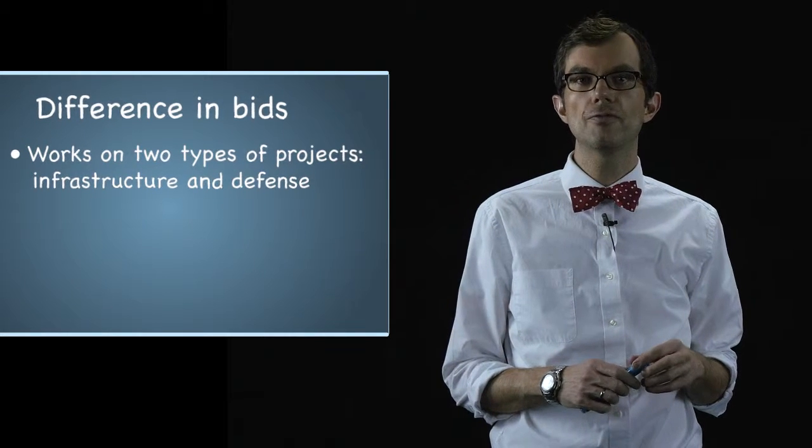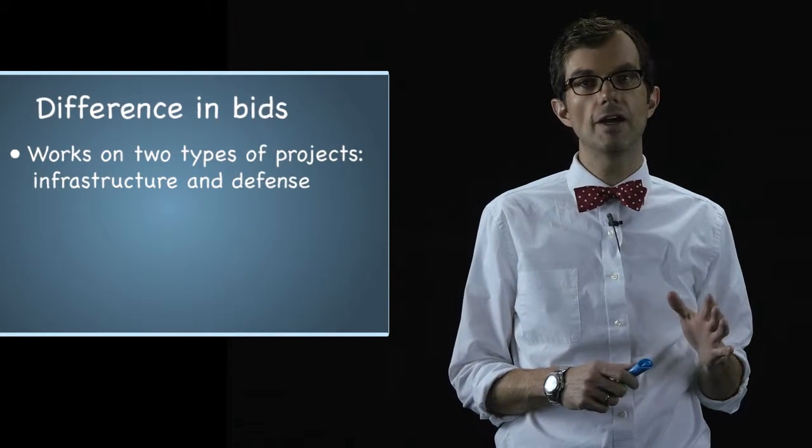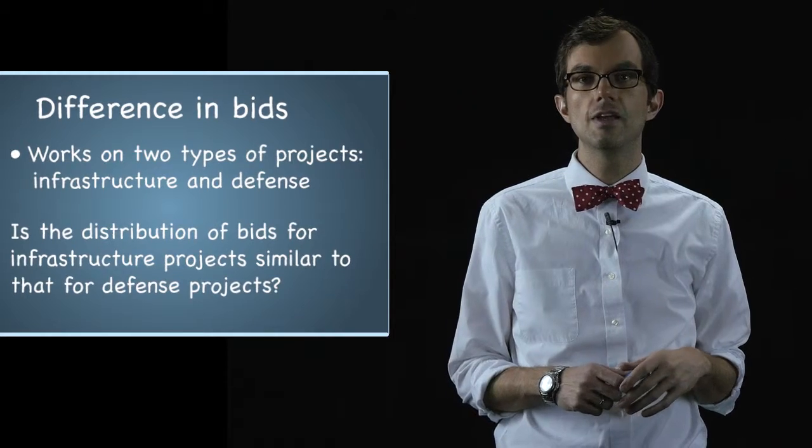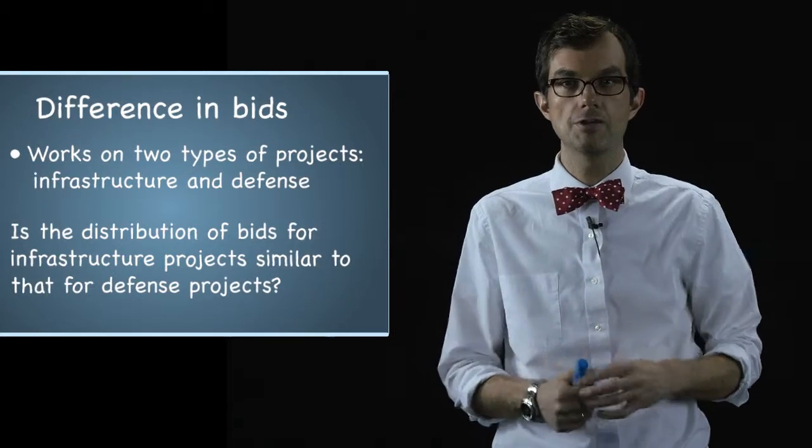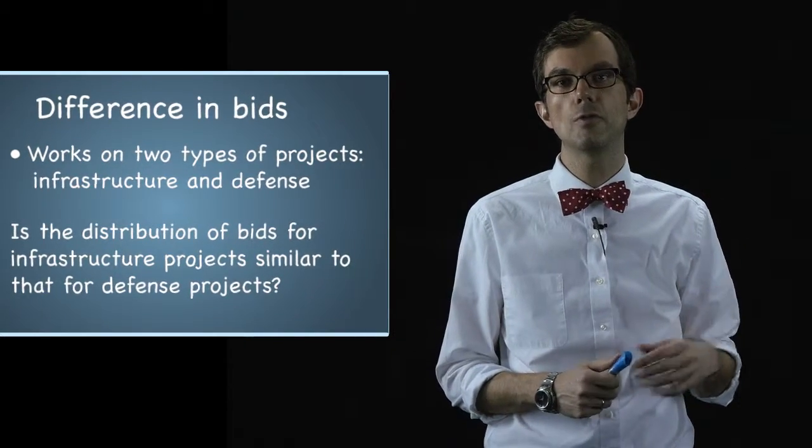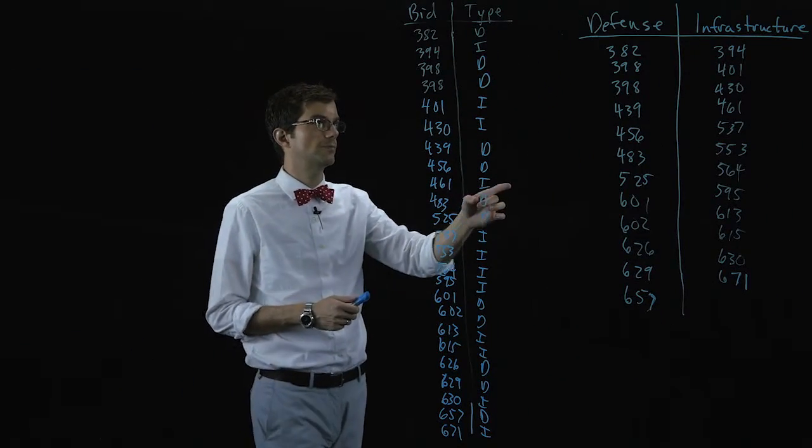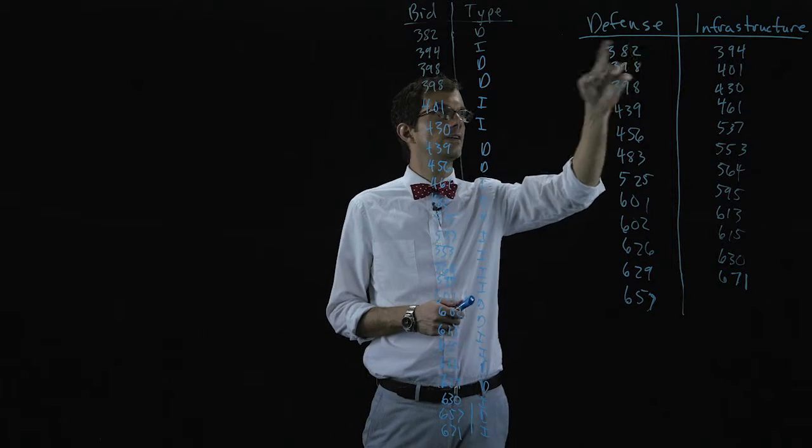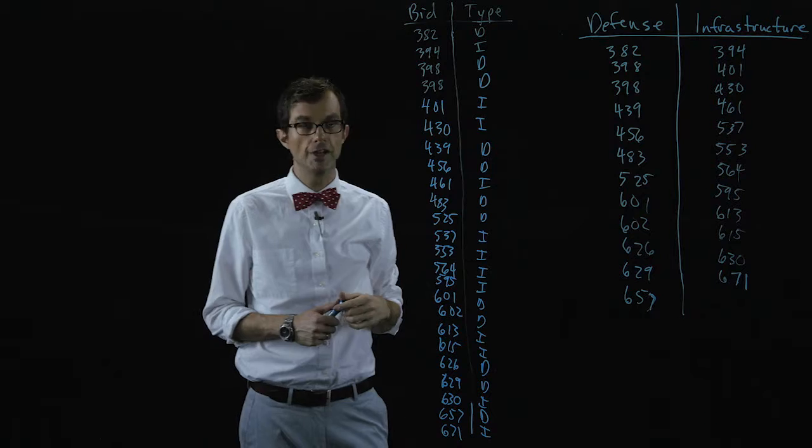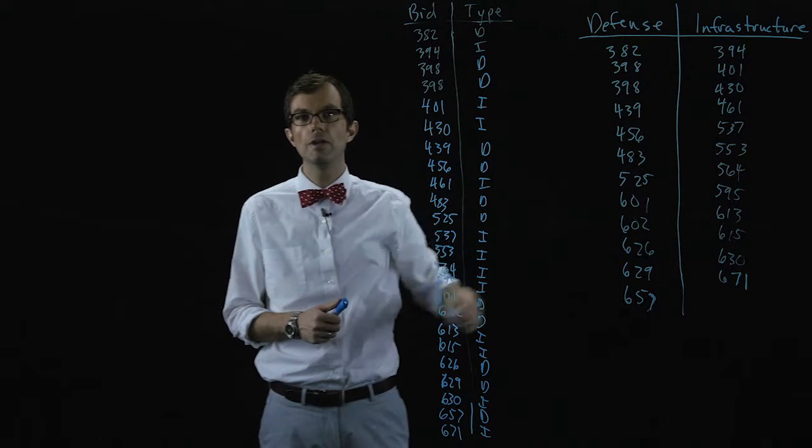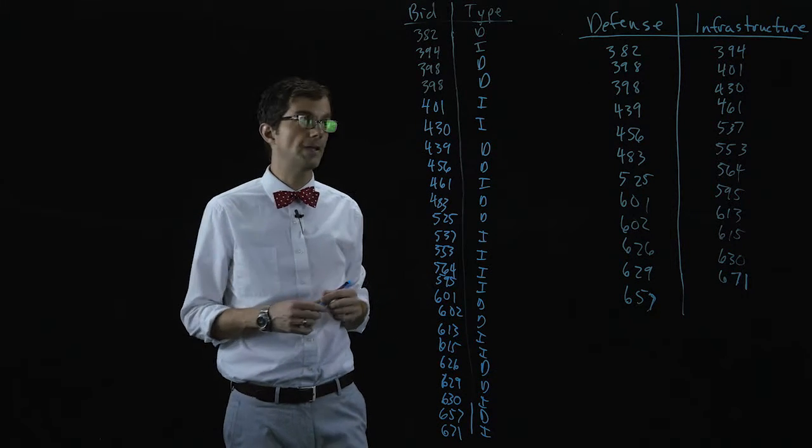You want to know if there's a difference in the amount that you bid for these two kinds of projects. That is, is the distribution of bids for infrastructure projects similar to that for defense projects. You collect a sample of twelve projects of each type. So we've got twelve defense projects and twelve infrastructure projects and these are the bids that we put in for each one of those kinds of projects.